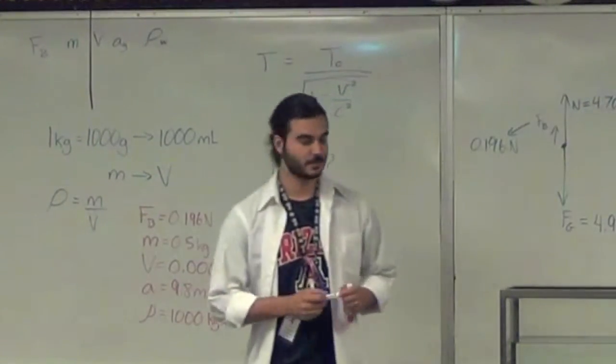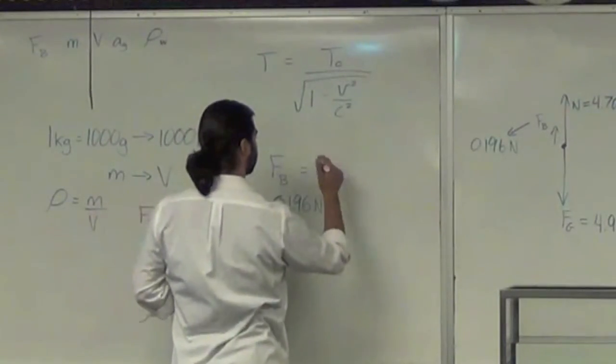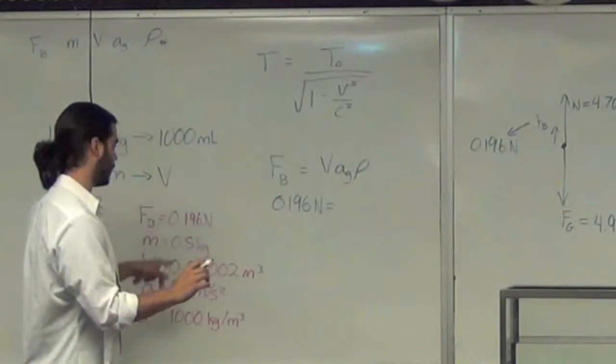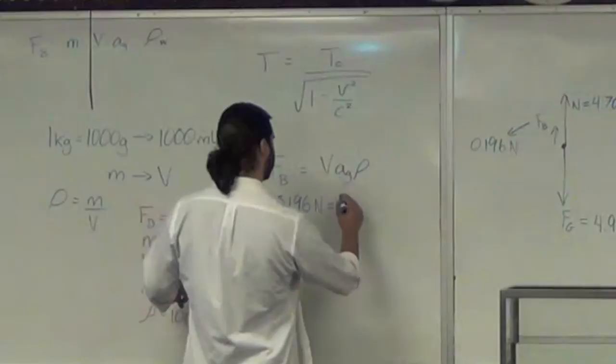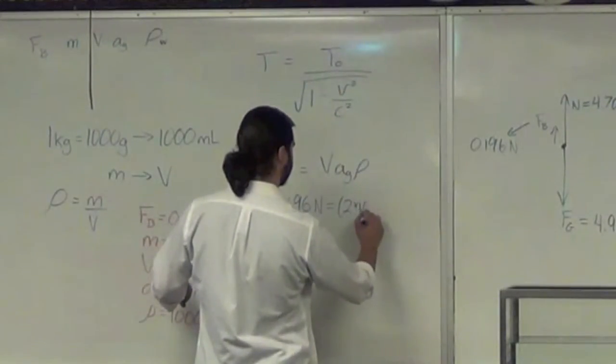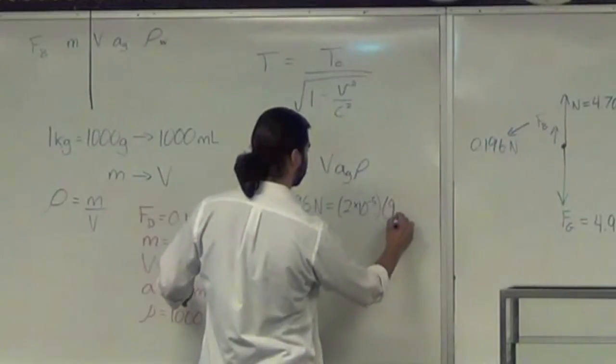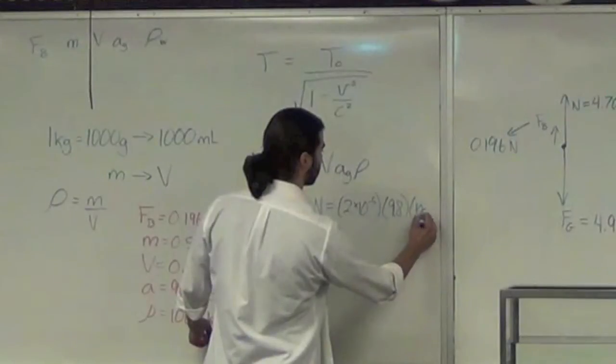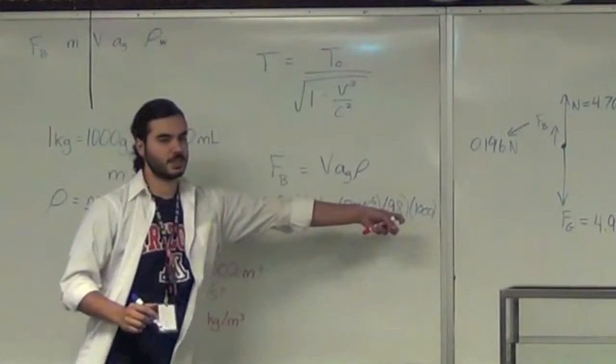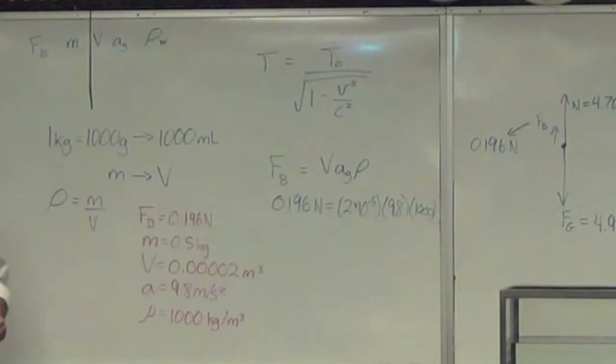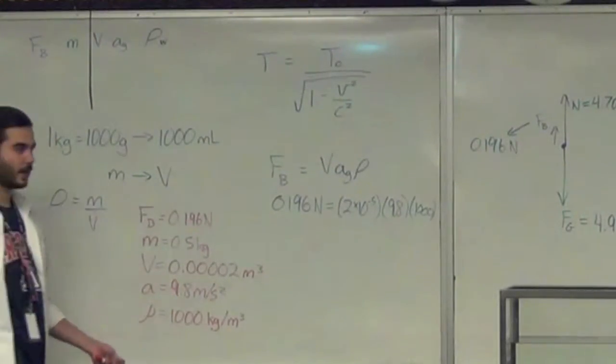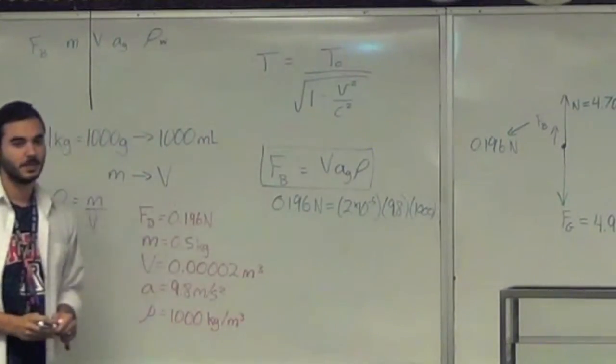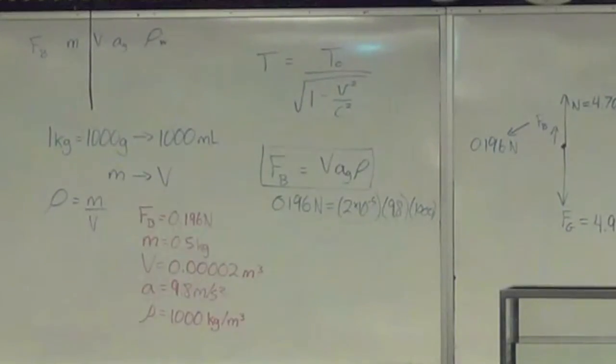So, volume times acceleration due to gravity times rho density. Let's confirm that. Volume here is 2 times 10 to the negative 5. Acceleration due to gravity is 9.8. And rho is 1,000 kilograms per meter cubed. If you put this in your calculator, does it equal 0.196? Yes. That is the equation. You guys figured out the equation for the buoyancy force.